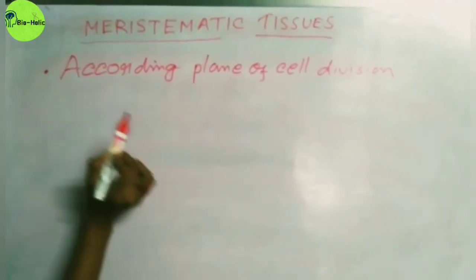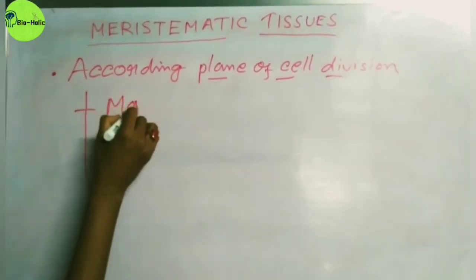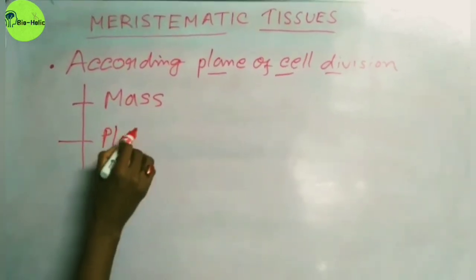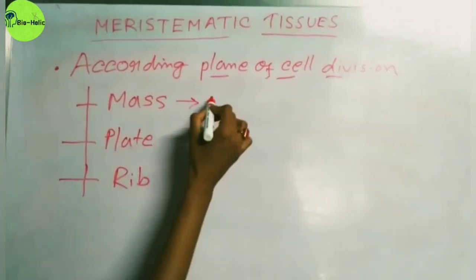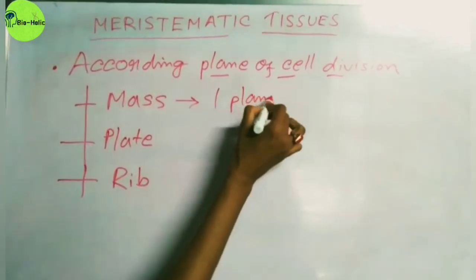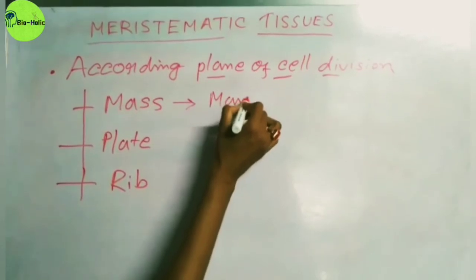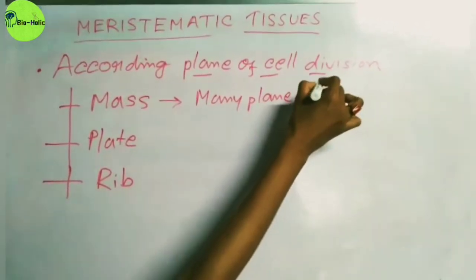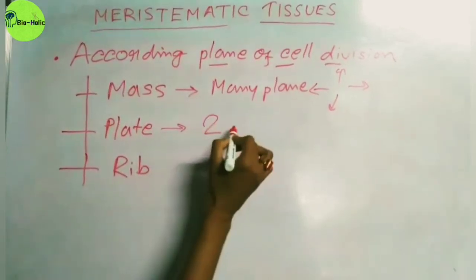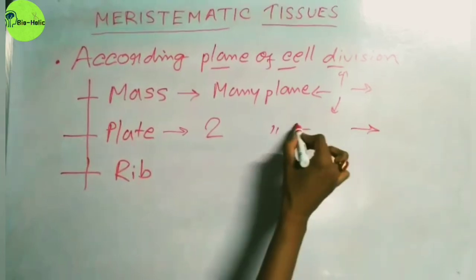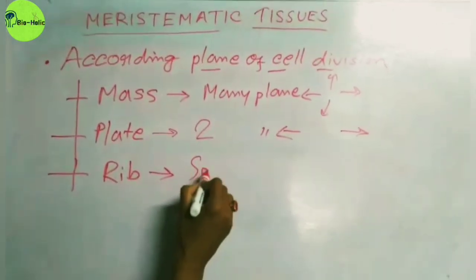The meristematic tissue can also be divided according to their plane of division into the mass meristem, the plate meristem, and the rib meristem. The mass meristem has many planes of division — it can be divided in every plane. The plate meristem has only two planes of division, such as the right side or the left side.